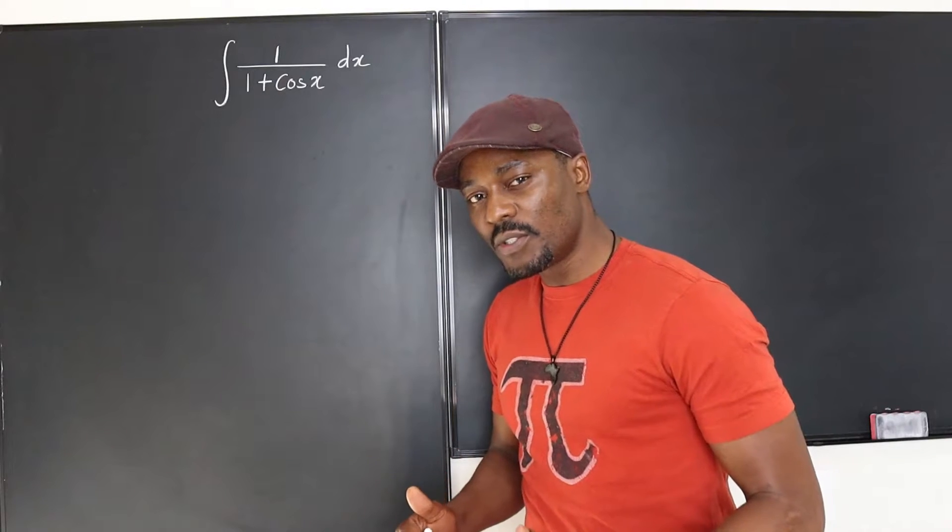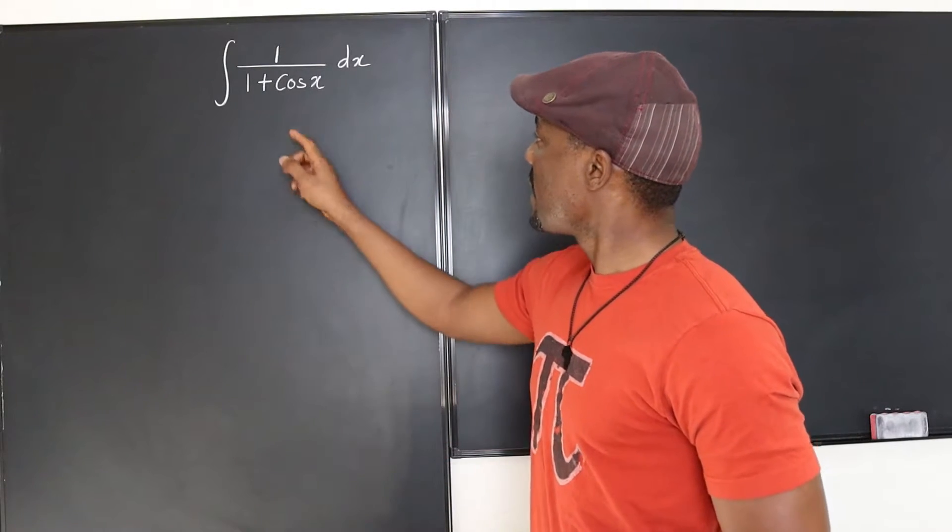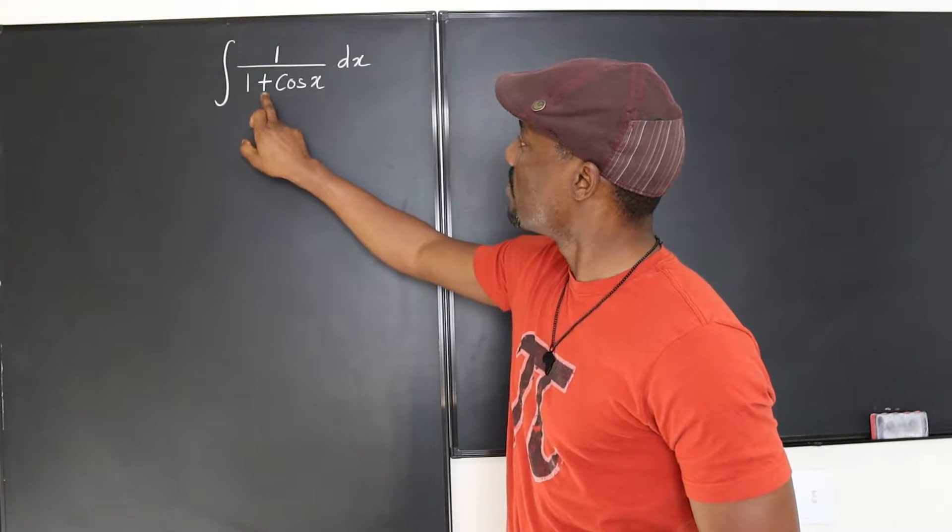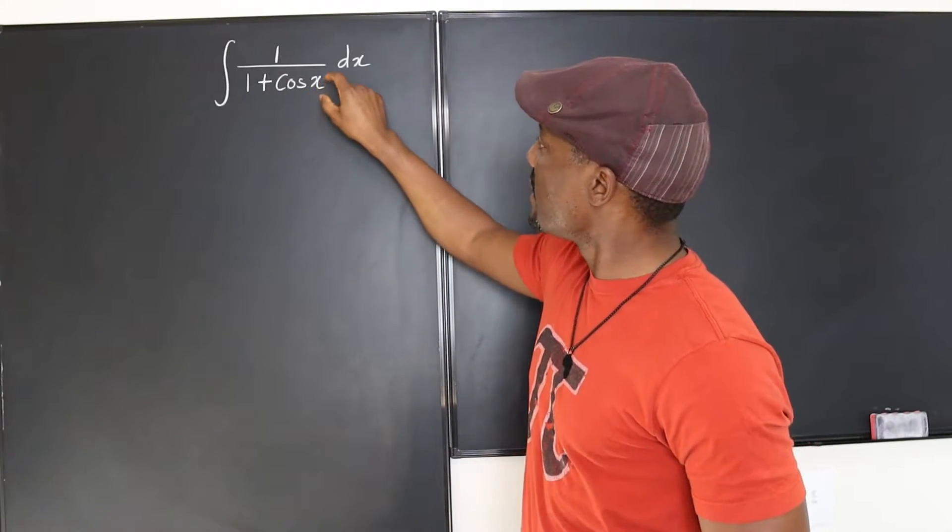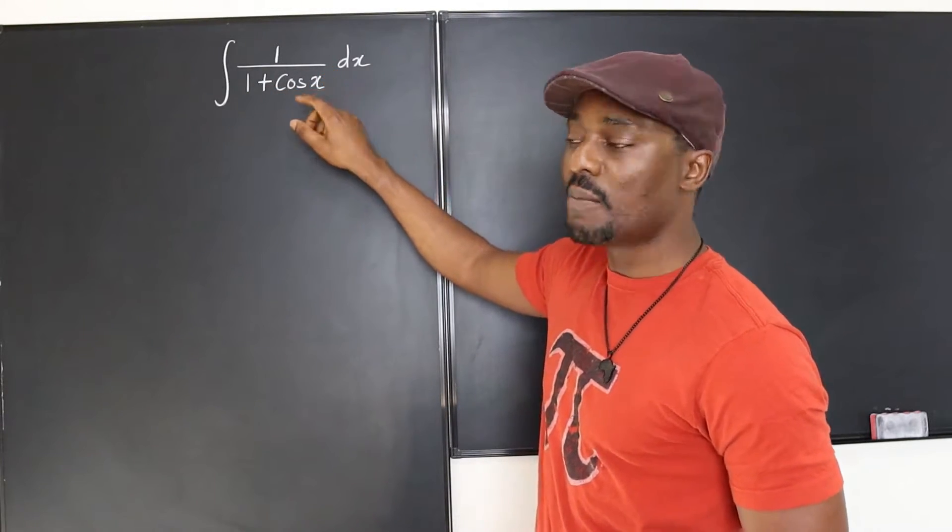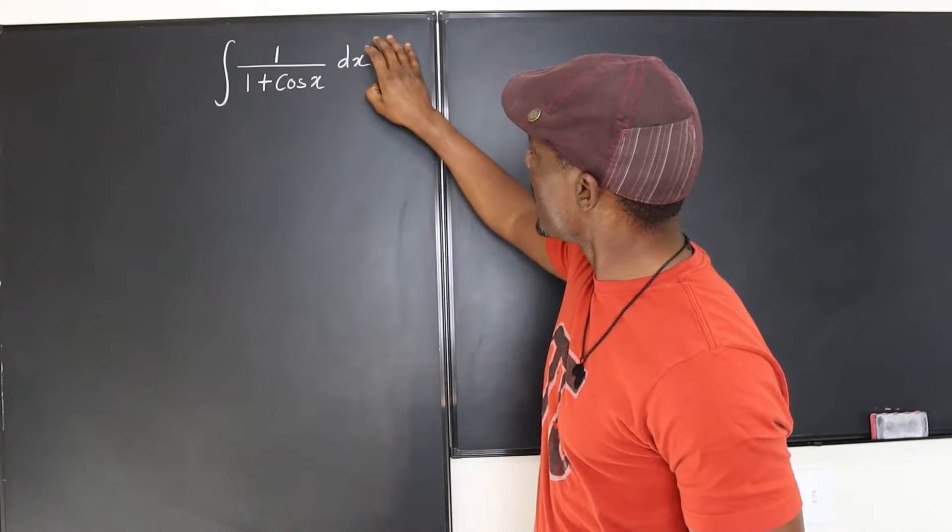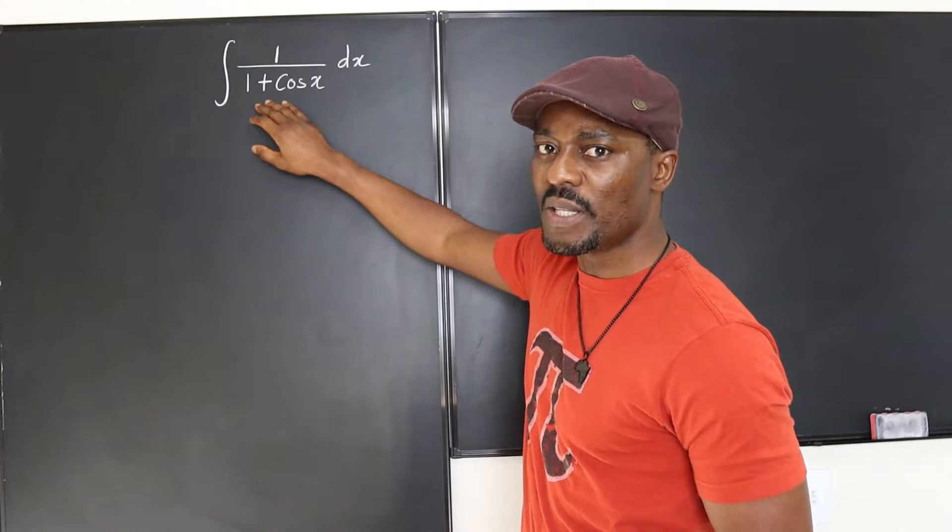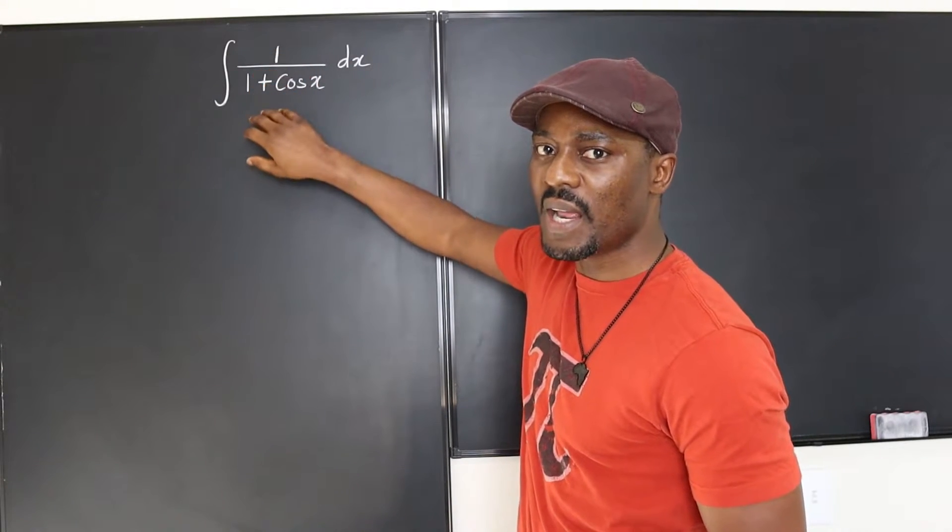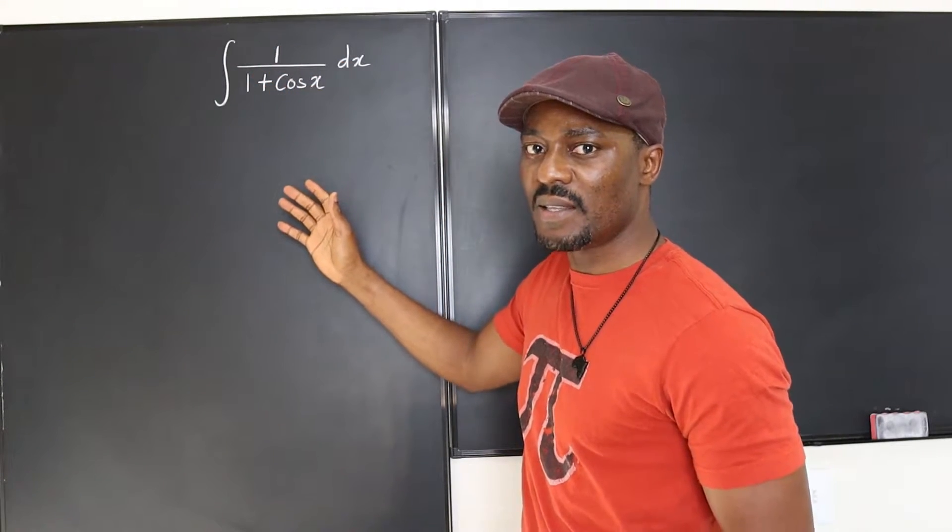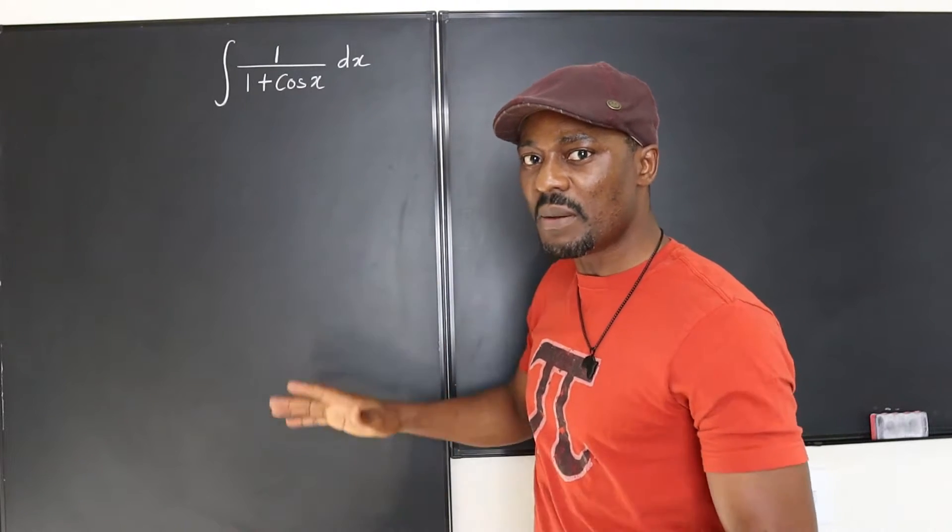So one thing I want you to consider is that if I decide to just go ahead and say let u be 1 plus cosine x, if I differentiate 1 plus cosine x, I'm going to get sine x. Well, I'm going to end up with sine x showing up and then there will be u. It's now a combination of u and sine x. Nothing is canceling anything up. So that would be a bad substitution.